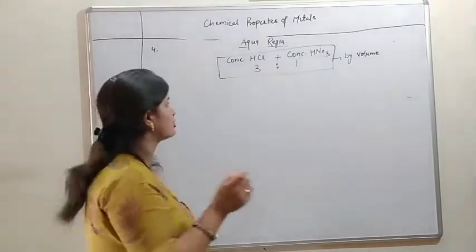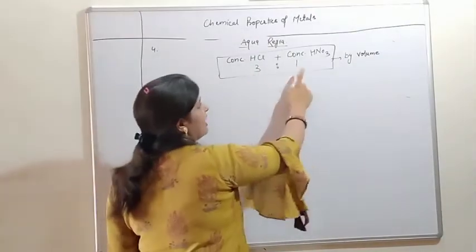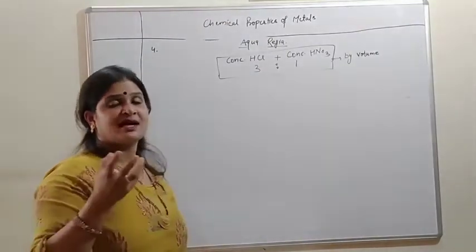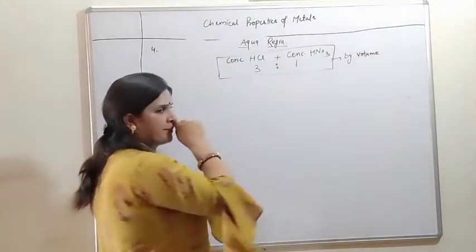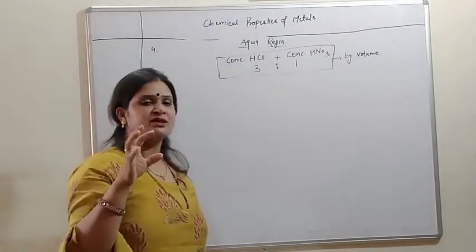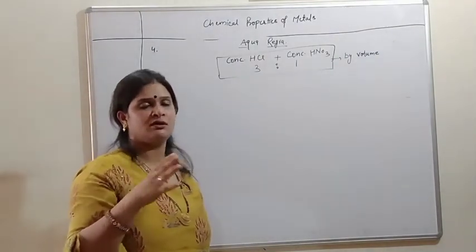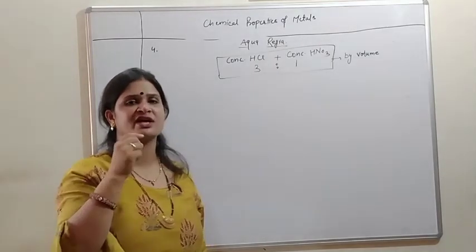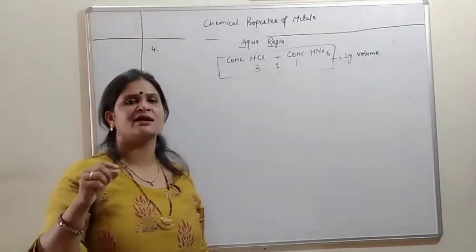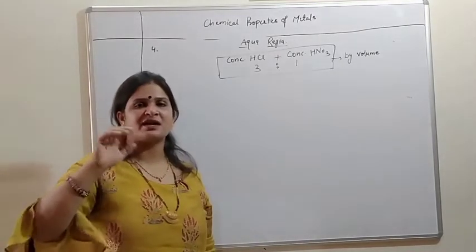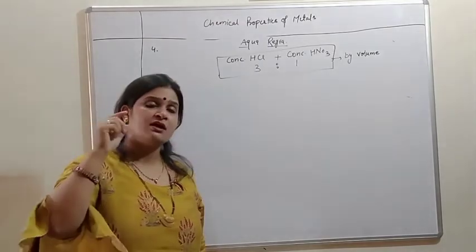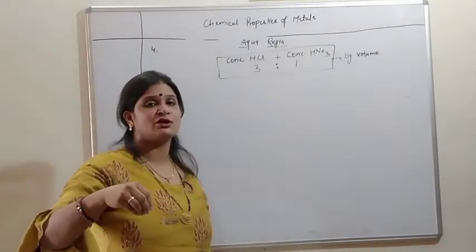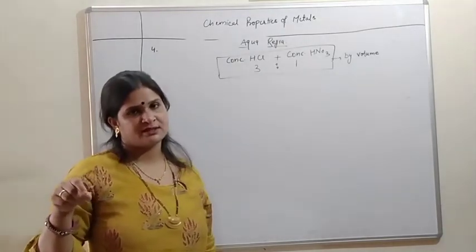That resulting solution is known as aqua regia. This solution is generally used to clean ornaments like gold and platinum. When their shine becomes dull or dirty particles deposit on these ornaments, to make them clean, we dip them into the aqua regia solution. That's the purpose for which it is used.